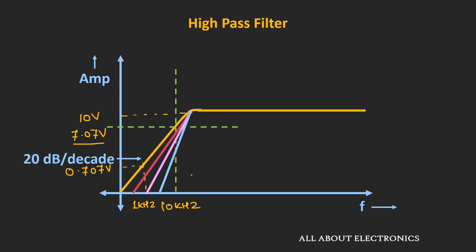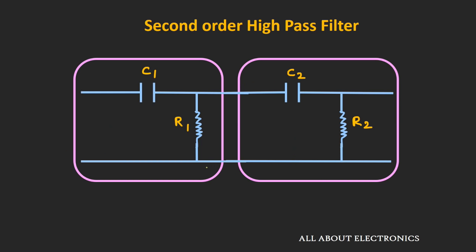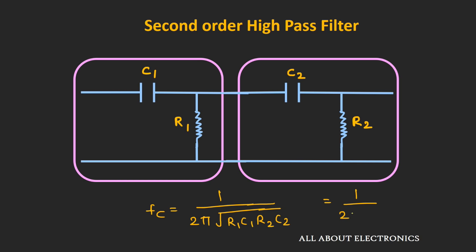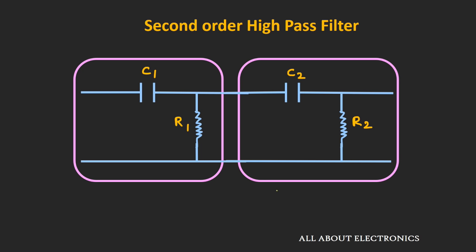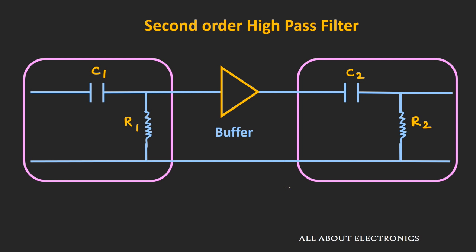By cascading first-order high pass filters, we can design higher-order high pass filters. For a second-order high pass filter, we cascade two high pass filters. If R1 = R2 and C1 = C2, the cutoff frequency is 1/(2π × R1 × C1). However, designing higher-order filters is not simple because the next stage may load the previous stage. To eliminate this loading effect, we should isolate the two stages using an electrical buffer, or we can use an active high pass filter, which we will cover in upcoming videos.